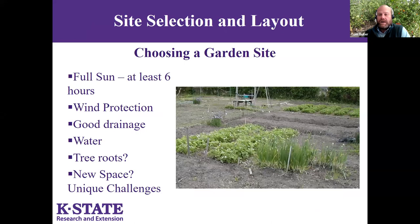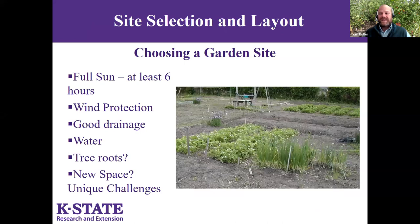If you don't have an existing vegetable garden and you're looking to start one, you're looking for a site with full sun — ideally at least six hours throughout the season. You won't get good plant growth without enough sun. If you're on the shadier side, you might reconsider what you're going to grow. Things that set fruit, like a tomato plant, will have a hard time without full sun, but you might be able to grow some leafy greens in a shadier spot.